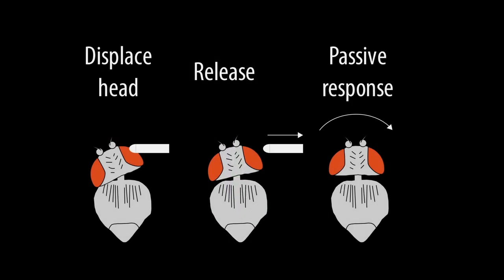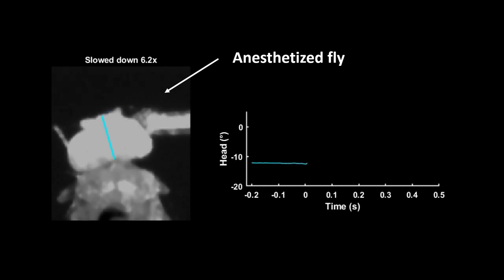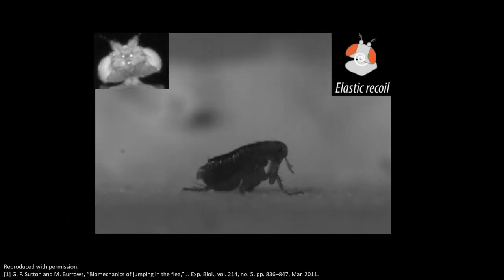Because most biological joints have some degree of inherent elasticity, we were curious if head reset saccades might be influenced by these same properties at the neck joint. To test this idea, we displaced the head of anesthetized flies and let go. We found that the elasticity of the neck joint was large enough to generate rapid movements of the head which could help flies initiate head reset saccades. Much like fleas take advantage of the elasticity in their legs to jump long distances, flies exploit the elastic properties of their neck joint to aid in generating rapid head movements and saccades.